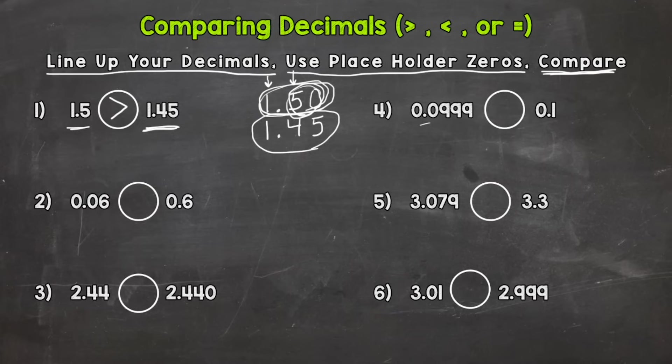So: line them up, use placeholder zeros, then compare from left to right.